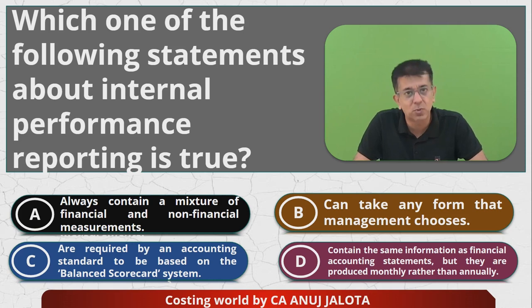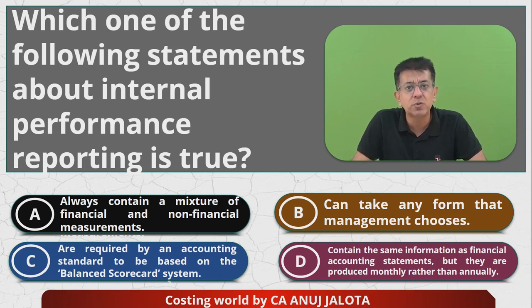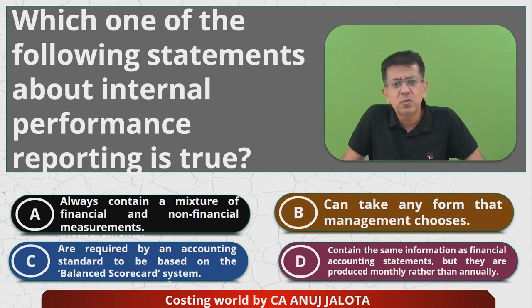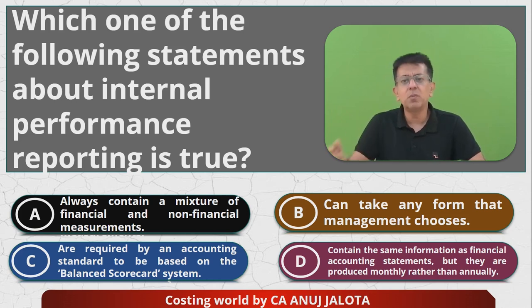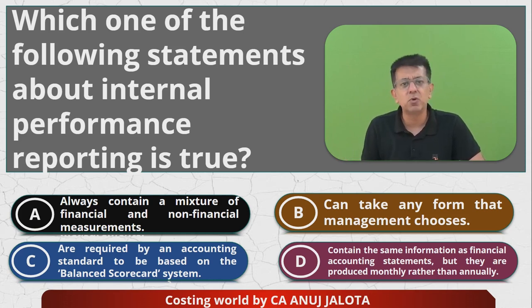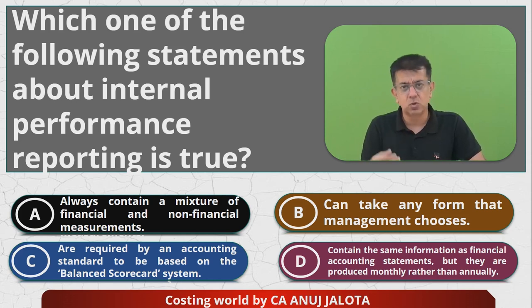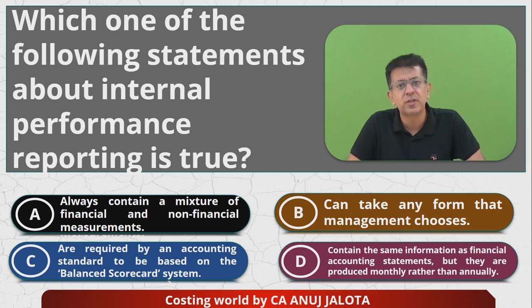Option D says it contains the same information as financial accounting statements — of course not. It can contain so much more. For example, in an IT company, you can measure how many correct lines of code a software engineer has written. So it can contain any information, not just from financial reports. Also, the point that it is produced monthly rather than annually — that also depends on the company. You can produce it monthly, weekly, or daily — there is no rule for that.